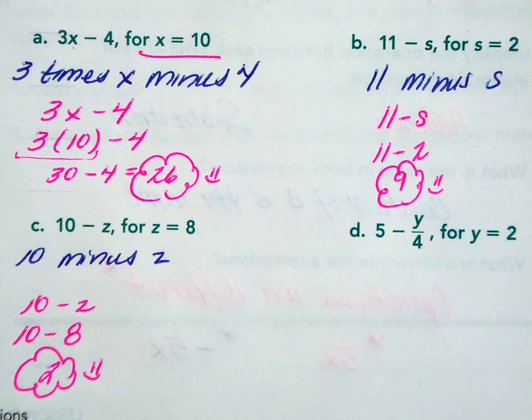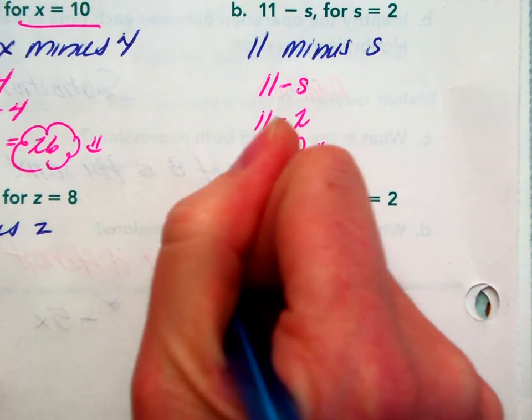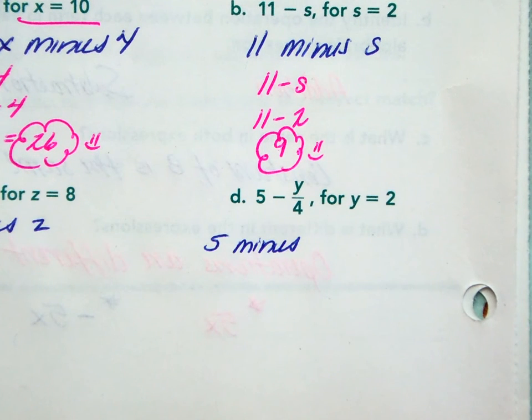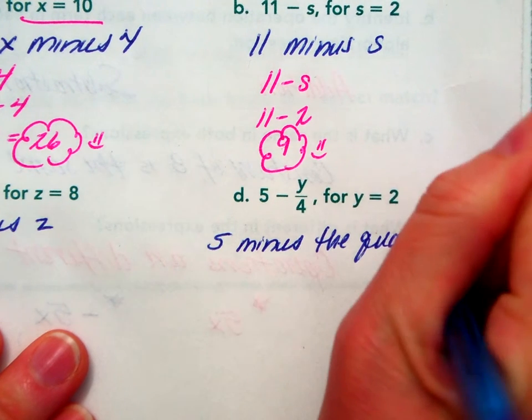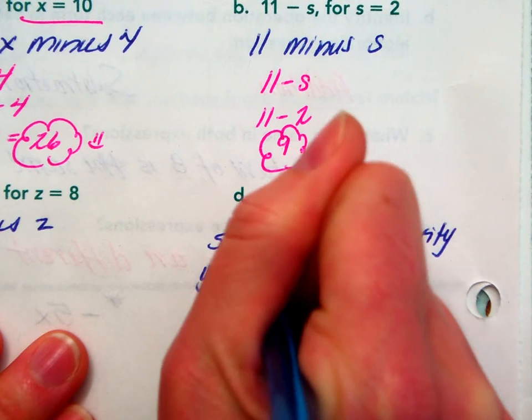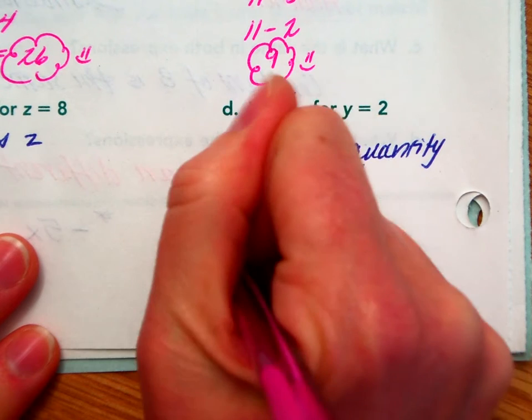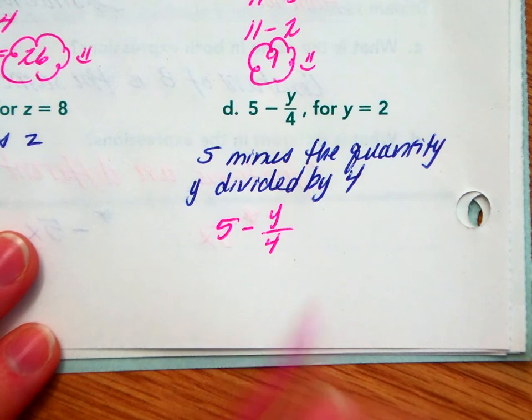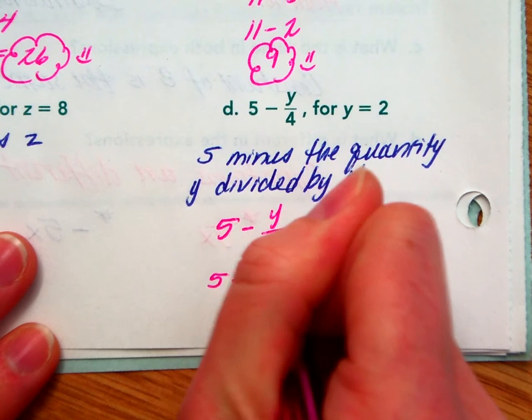Now, we've got, ah, a two-parter. 5 minus Y divided by 4. 5 minus, the answer cube calls it, the quantity Y divided by 4. The quantity Y divided by 4. Let's calculate it. We've got 5 take away Y over 4. I'm going to substitute the value of Y. Y is indicated as being worth 2. 5 minus 2 over 4.